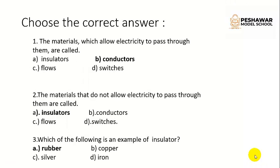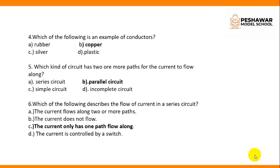Choose the correct answer. These exercises are on your book page number 95. Question number 2: The materials that do not allow electricity to pass through them are called — A, insulators. Number 3: Which of the following is an example of insulator? A, rubber. Number 4: Which of the following is an example of conductors? Correct option is B, copper. Which kind of circuit has two or more paths for the current to flow along? Option B, parallel circuit.